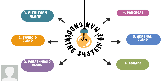There are six types of glands in the endocrine system. First is the pituitary gland, second is the thyroid gland, third is the parathyroid gland, fourth is the pancreas, fifth is the adrenal gland, and the sixth one is the gonads. You can remember this easily using a flowchart.